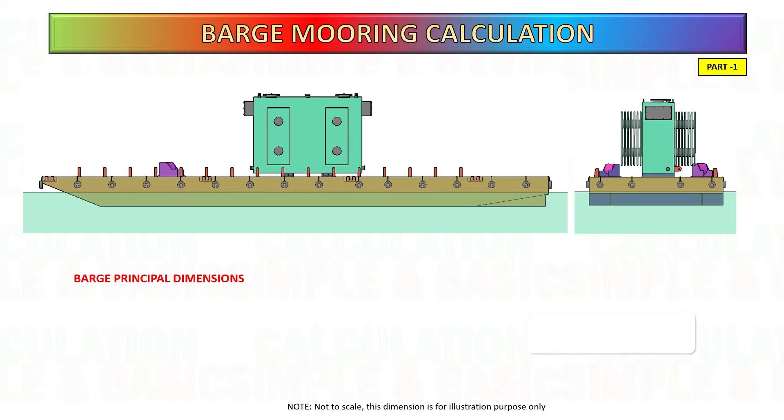For this calculation, we will use a 230 feet barge with length of 70.1 meter, width is 19.5 meter, and depth is 4.27 meter. Let's consider the barge draft is 2 meter and the barge freeboard is 2.27 meter.